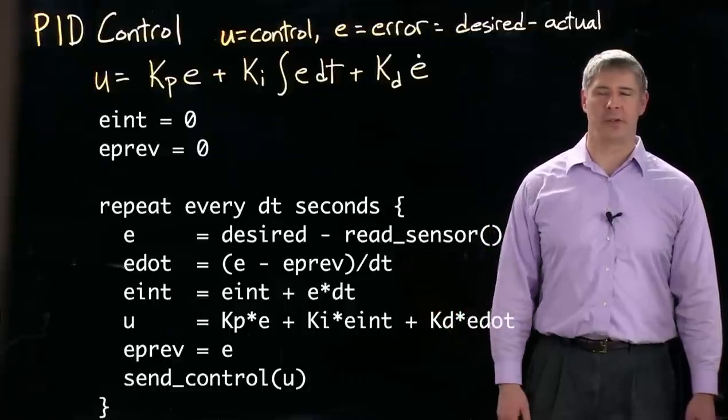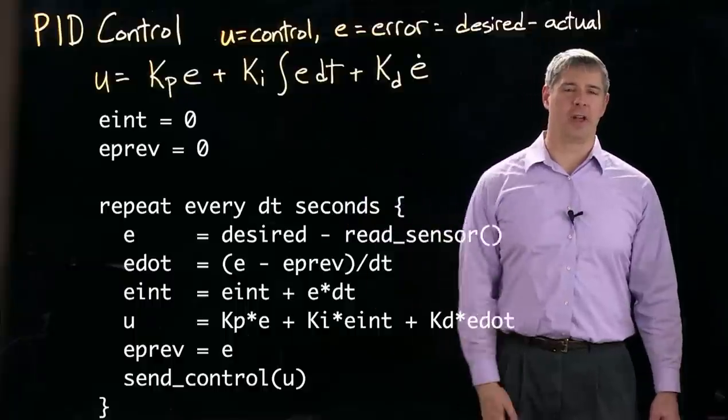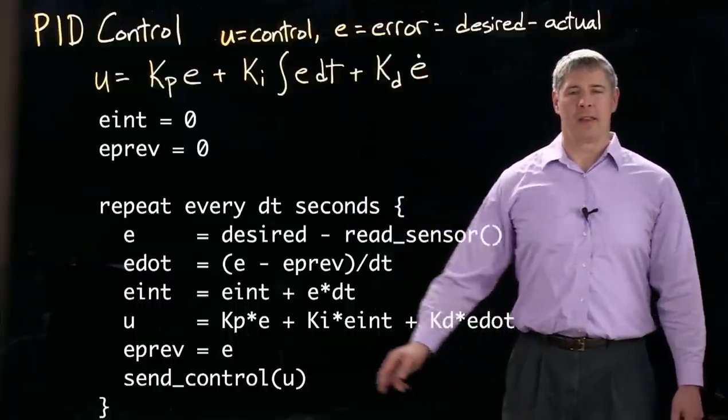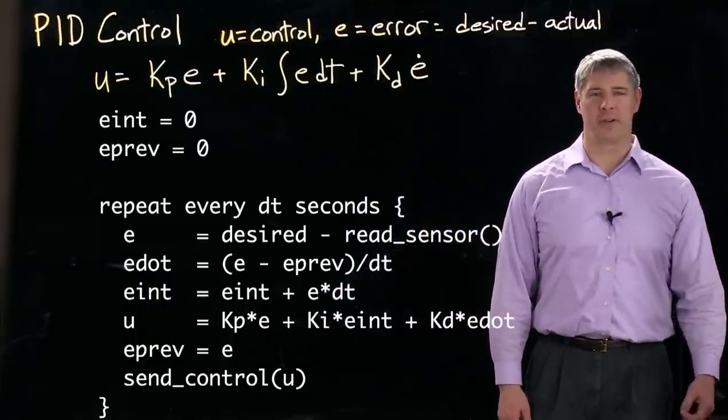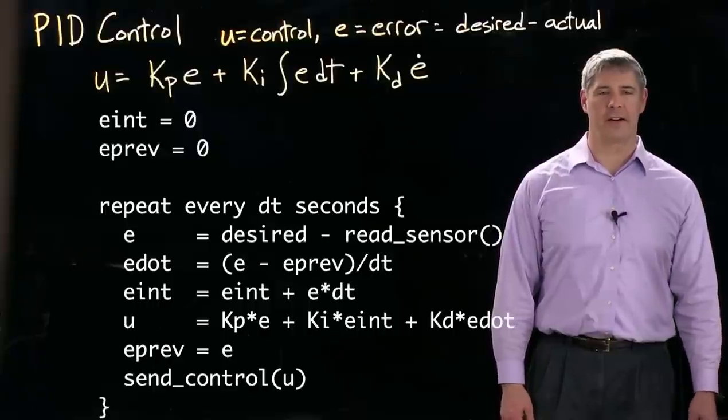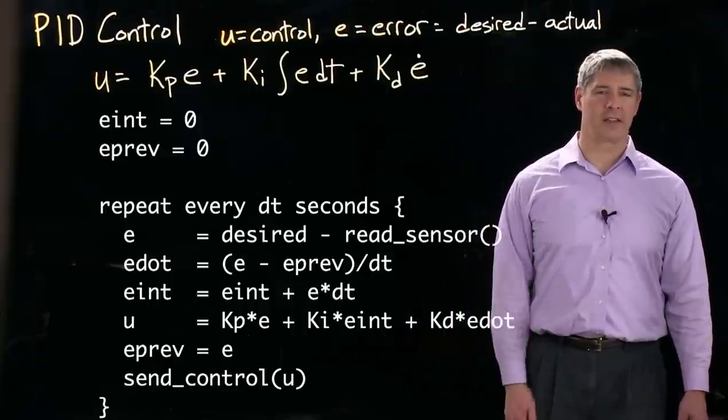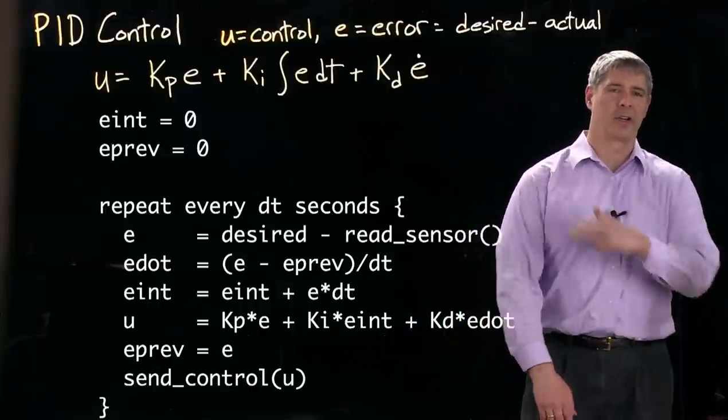And then finally down here, we calculate u according to the control law that we just gave. Then so the next time we can get the right numerical derivative, we set e previous equal to the current error. And then we send the control output, for example, the torque to the motor.